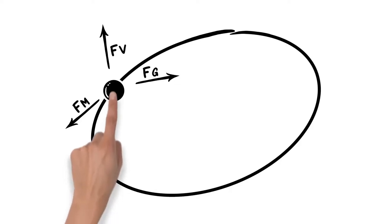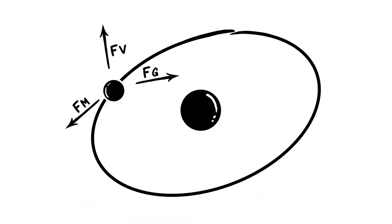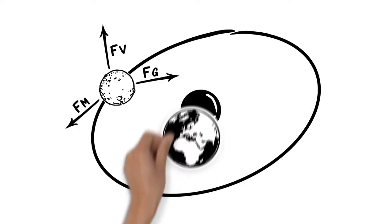If a celestial body revolves around another, we call this movement an orbit, like our Moon, which orbits the Earth.